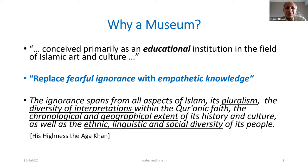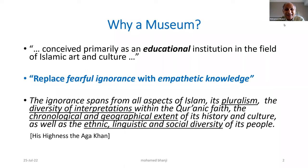I would like to explain why there was a need for a museum and why in Canada. The Aga Khan Museum was conceived as an educational and outreach institution in the field of Islamic art and architecture. The reason why the Aga Khan decided to establish the museum is essentially to replace ignorance with knowledge. The ignorance spans various aspects of Islam — what is generally not known is the pluralism within Islam, the diversity of interpretations of the various Quranic faiths, and the whole chronological and geographical extent of its history and culture.